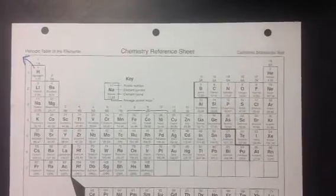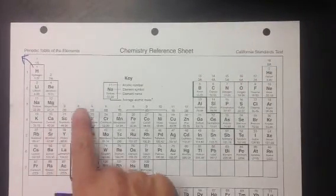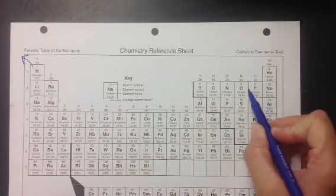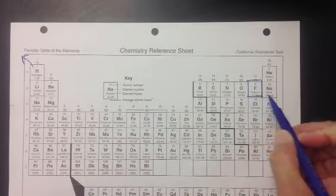As you move across the periodic table, the electronegativity is going to increase. You need to know that fluorine is your most electronegative element.